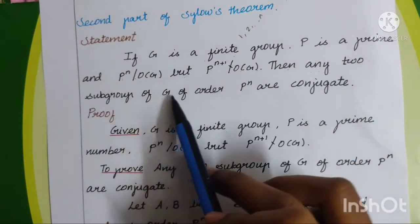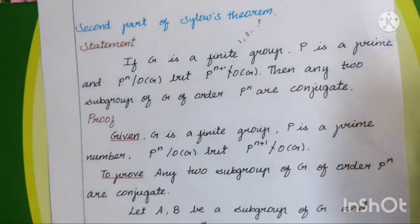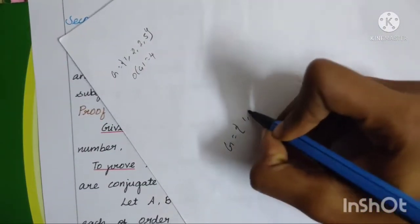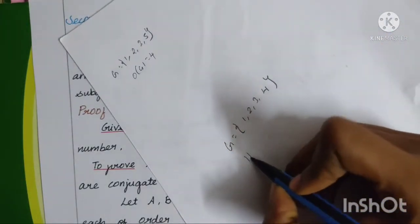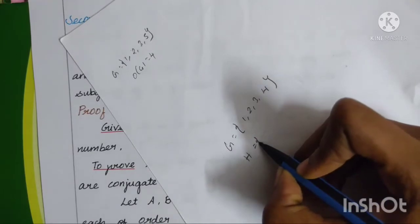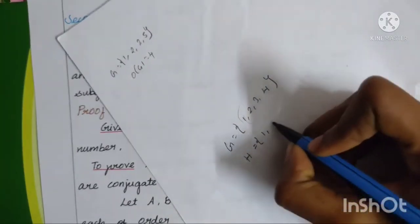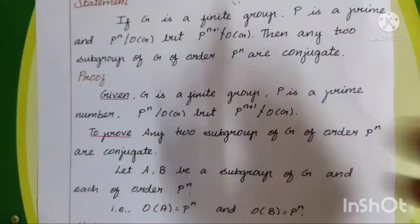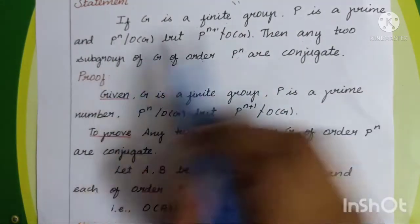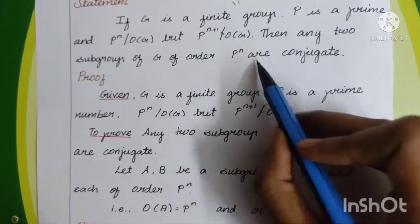Then any two subgroups of G of order P power n are conjugate. A subgroup — G is a group with elements 1, 2, 3, 4. If we have a subgroup with those elements, a subgroup of order p power n, the second subgroup also of order p power n, then they are conjugate.